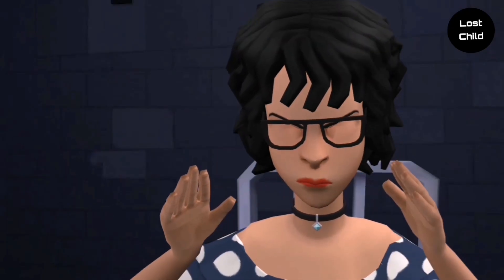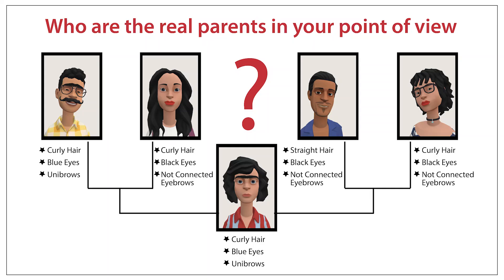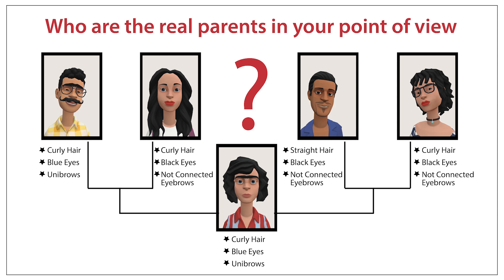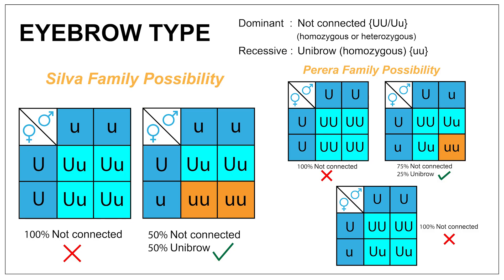You can't claim a child just by those trivial things. Who are the real parents in your point of view? Let's resolve this problem. There are 3 main clearly visible traits to consider: eyebrow type, eye color, and hair type. Regarding the genetic characteristic of eyebrow type, the dominant trait is unconnected eyebrows and the recessive trait is unibrow.